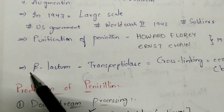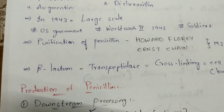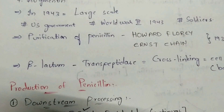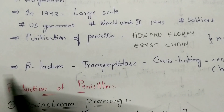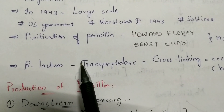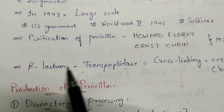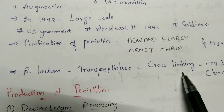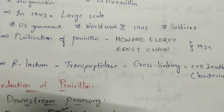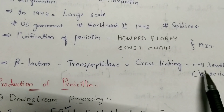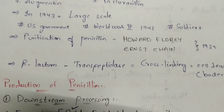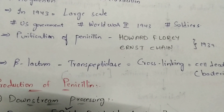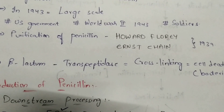Going deeper into the mechanism: the beta-lactam combines with the transpeptidase enzyme. When beta-lactam combines with transpeptidase, cross-linking takes place upon the peptidoglycan layer of the cell membrane. This cross-linking within the peptidoglycan layer leads to cell death — bacterial cell death. This phenomenon is called apoptosis, which means programmed cell death.